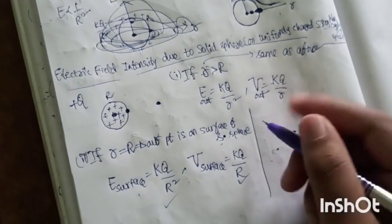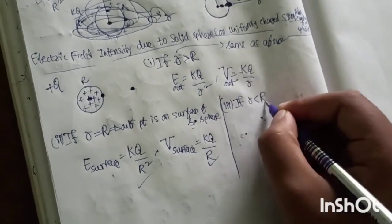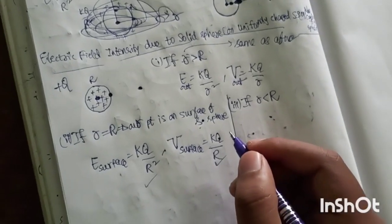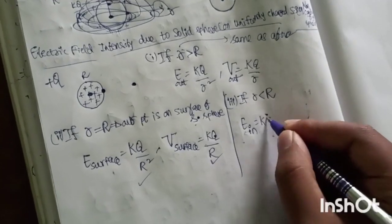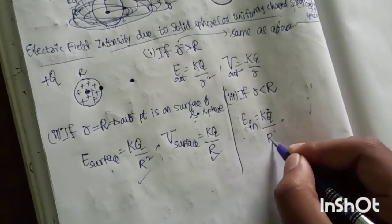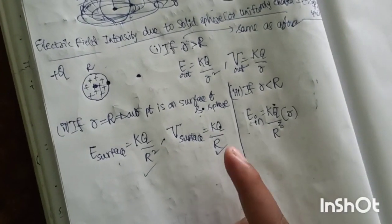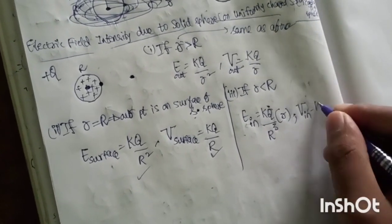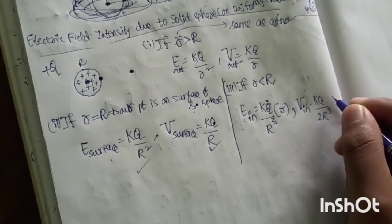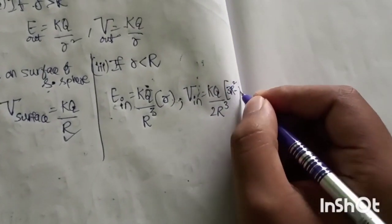Case 3 is the important case — it is different for solid sphere compared to hollow sphere. If r is less than capital R, inside the solid sphere: E equals kQ by R cubed times small r. And V equals kQ by 2R cubed times the quantity 3R squared minus r squared.